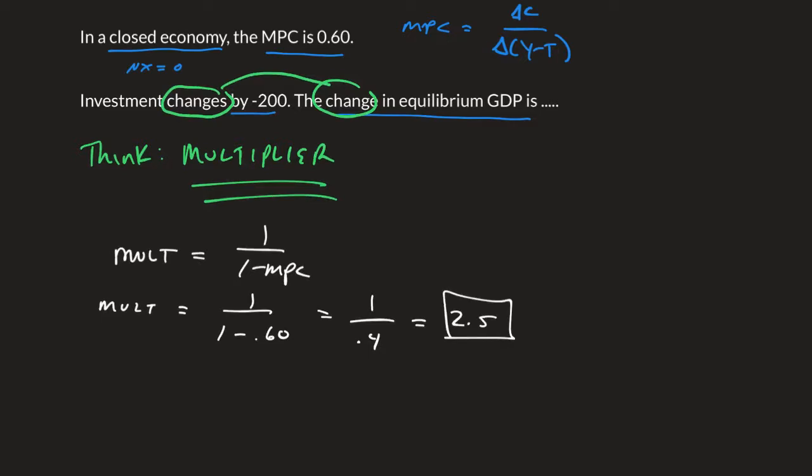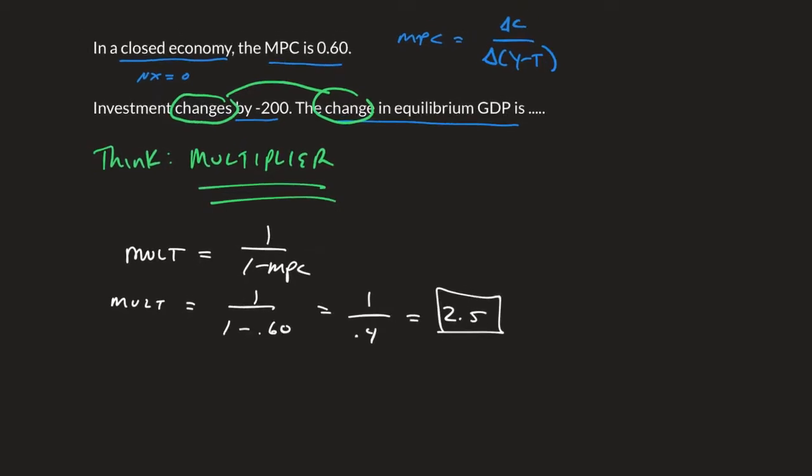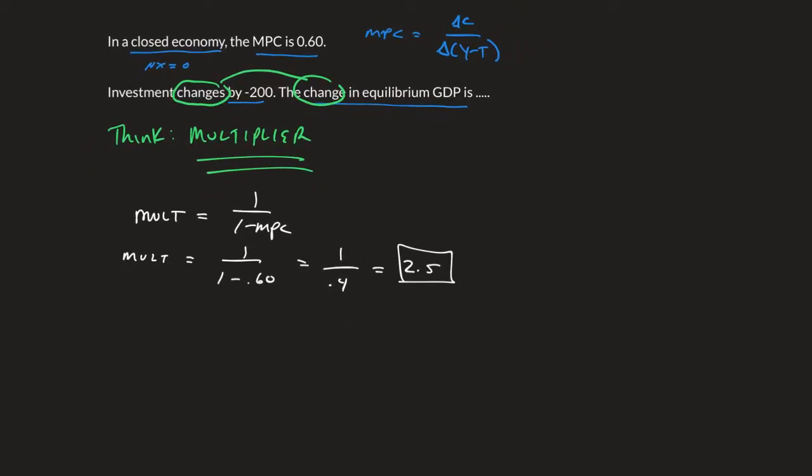Let's make this smaller so we can work everything out. We know that by definition, my change in GDP equals any change in autonomous spending times this multiplier. That's the idea of the multiplier. The change in GDP is what we're looking for.